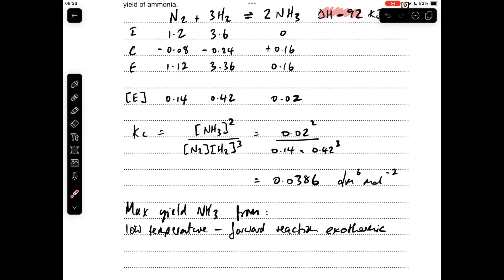If we think about pressure, we're looking at the moles of gas on each side of the equation. We've got 4 moles of gas on the left, only 2 on the right, so a high pressure will favor the forward reaction because there's less moles on the right hand side.